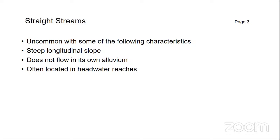Alluvium is the material the stream bed is made out of. If the stream moved that material to its current location, it can move it somewhere else. But if the stream bed material was not placed by the stream — or stream characteristics have changed over millennia — it may not be able to move it. So straight streams are also located in headwater reaches on steep slopes.